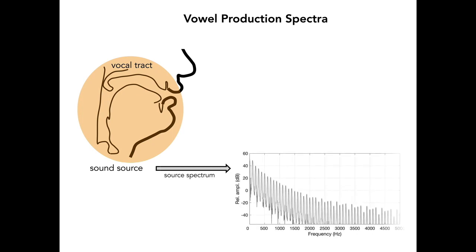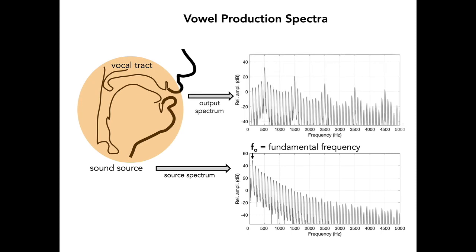An example spectrum of a voice source signal is shown here. It contains a fundamental frequency component and many harmonics whose amplitudes decrease as a function of increasing frequency. An example spectrum of the output pressure at the lip opening is also shown here. It contains exactly the same fundamental frequency component and harmonics, except that their amplitudes have been modified by the filtering effect of the vocal tract.